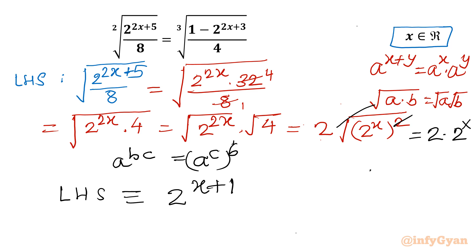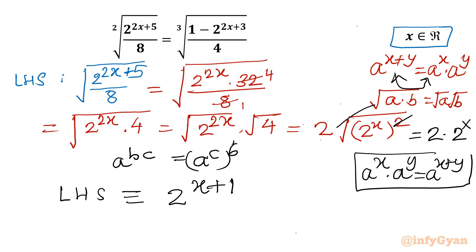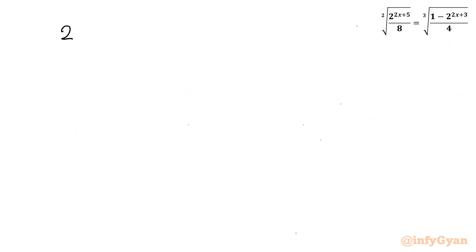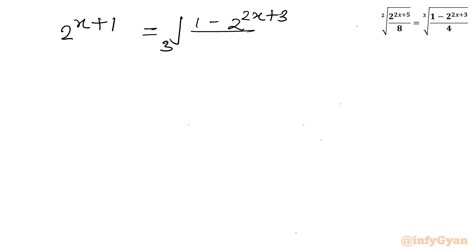The property used here is a^x · a^y = a^(x+y), the reverse of what we used earlier. So LHS is equal to 2^(x+1). I will now put this value into the equation, writing 2^(x+1) = cube root of 1 minus 2^(2x+3)/4.